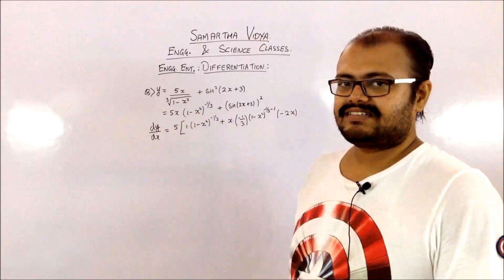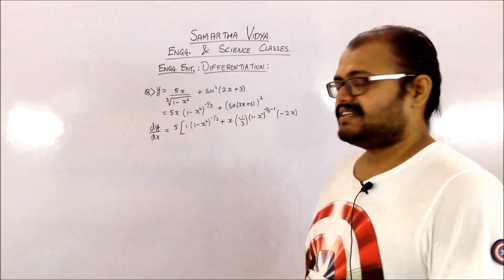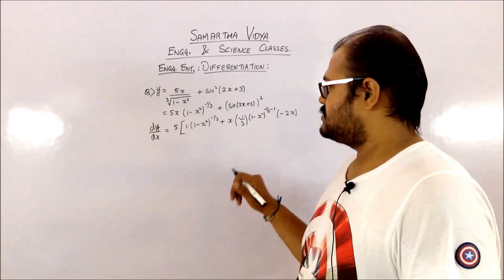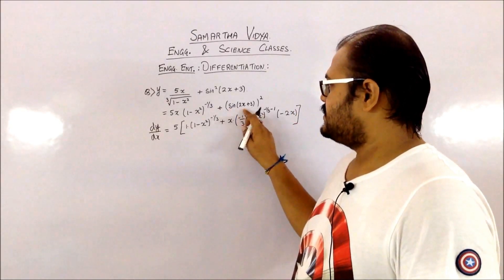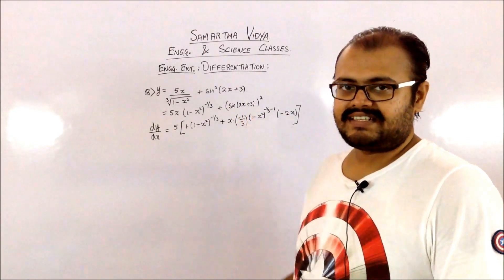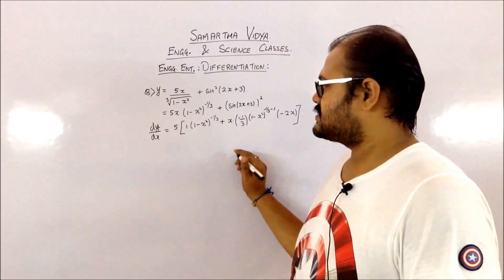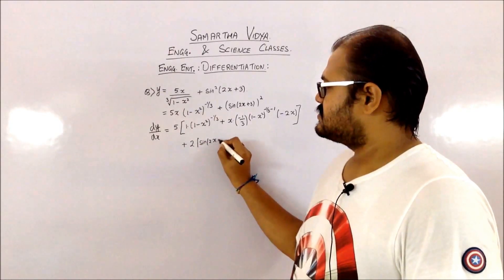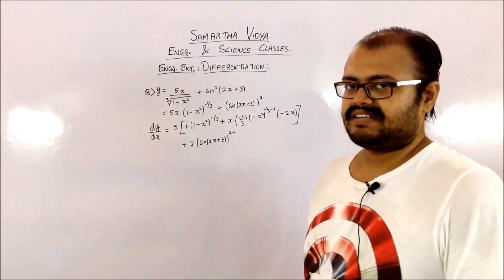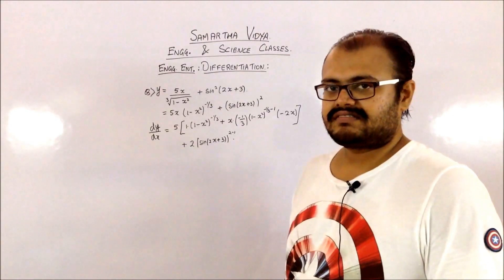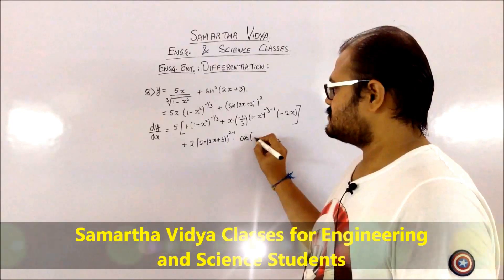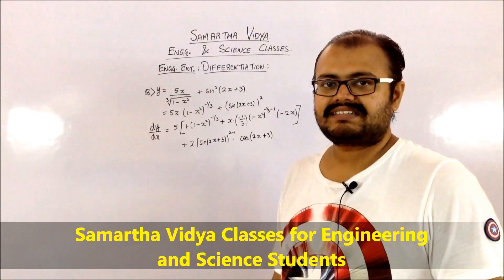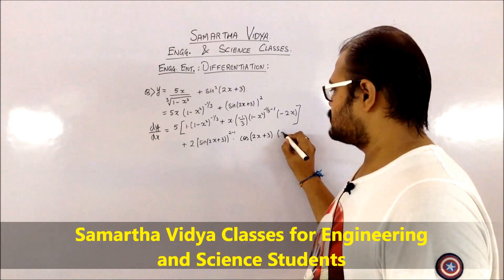The derivative of the first term is now done. Moving on to the second term — sine of (2x plus 3) raised to the square — the outside function is the square. Its derivative is 2 times sine of (2x plus 3) raised to 1, multiplied by the derivative of the sine, which is cosine. Inside the sine there is also the term (2x plus 3), so you take its derivative, which gives a factor of 2.